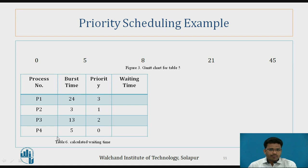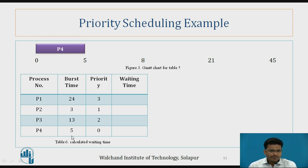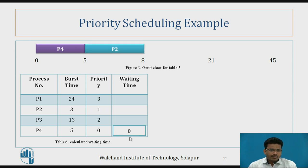We need to find the lowest number, which denotes the highest priority. P4 has priority 0, so P4 is executed first, with burst time 5, executing from 0 to 5 milliseconds. Its waiting time is 0. Next is P2 with priority 1, which has higher priority than P1 and P3. P2 executes from 5 to 8 milliseconds, and its waiting time is 5.